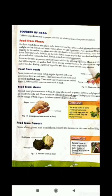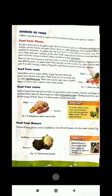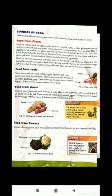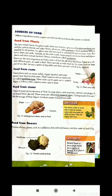Food from plants. You have already learned that plants make their own food by a process called photosynthesis, using sunlight, carbon dioxide, and water. Hence, plants are called producers. Plants produce more food than required for themselves, so they store the extra food in various parts such as roots, stem, flower, leaves, fruits, and seeds.